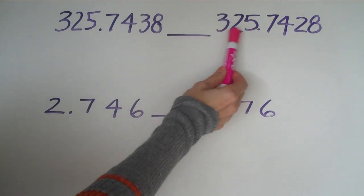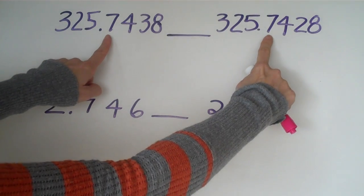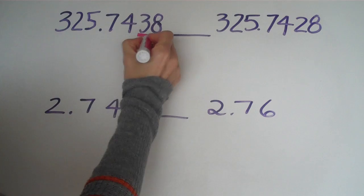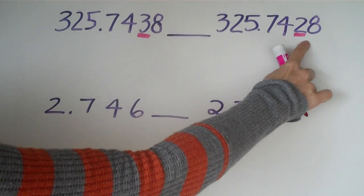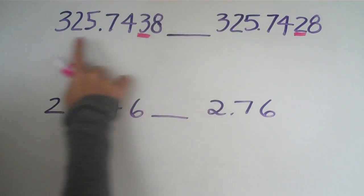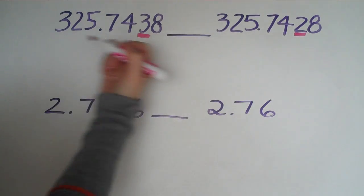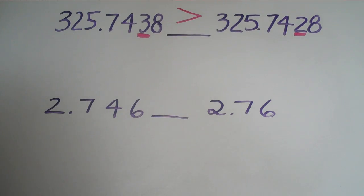We know on the left here we have 3, 2, 5, same on the right, 3, 2, 5, and then we have the decimal. Then again we both have 7, 4, and here's where the numbers start to become different. We have a 3 and a 2. Everything else on the left is the same. So if 3 is greater than 2, then this number right here is going to be greater than the second number.